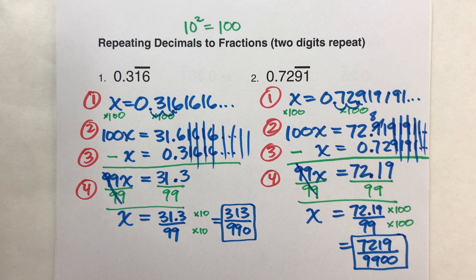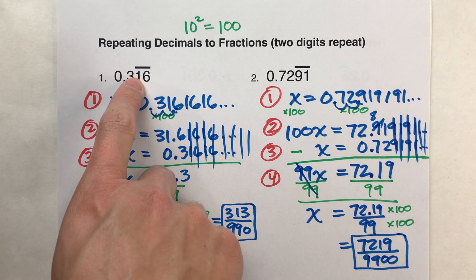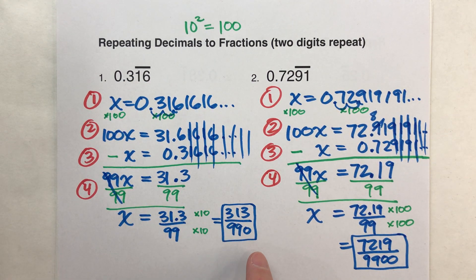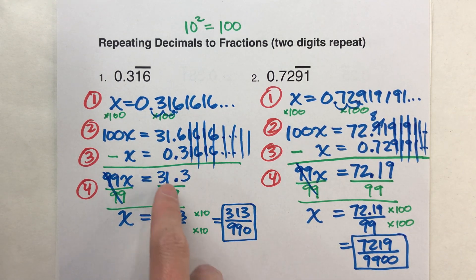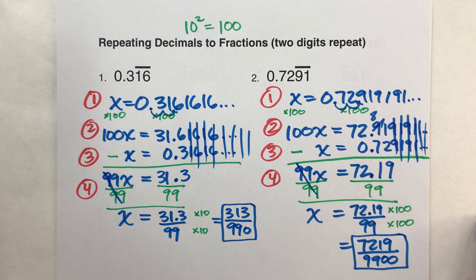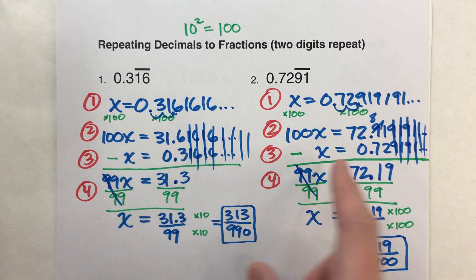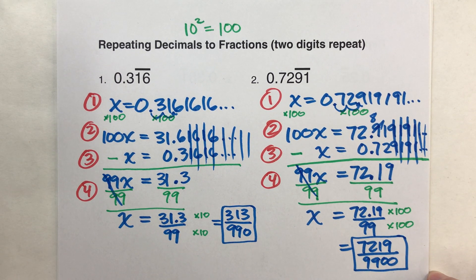So those are the steps to changing a repeating decimal to a fraction. Really be careful here because now we're starting to have a lot of different kinds of digits. And if you move that decimal over too many times or not enough times, those digits aren't going to line up and they won't subtract off.